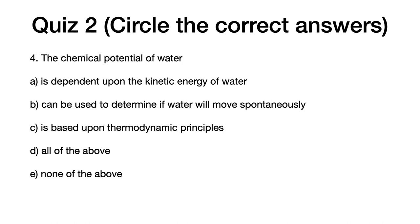Number four, the chemical potential of water, A, is dependent upon the kinetic energy of water. B. Can be used to determine if water will move spontaneously.